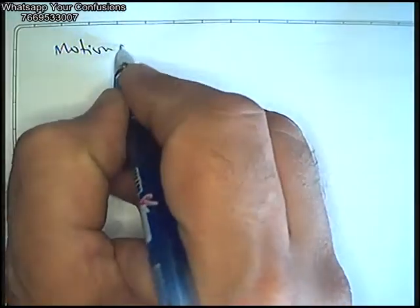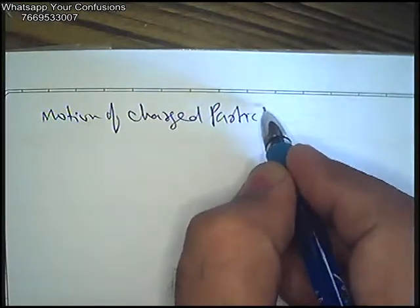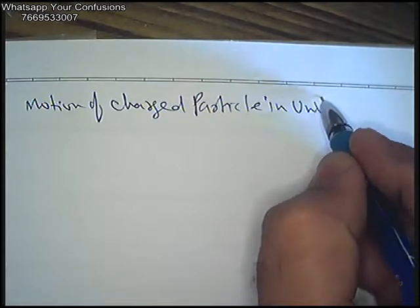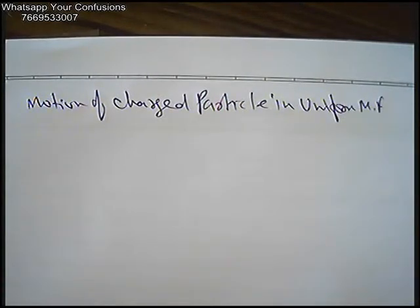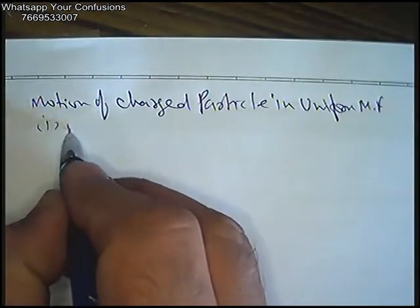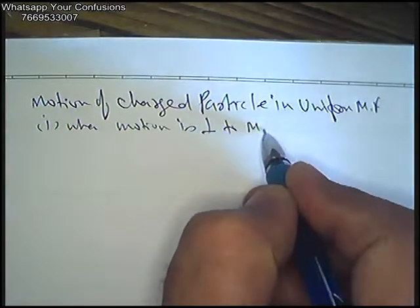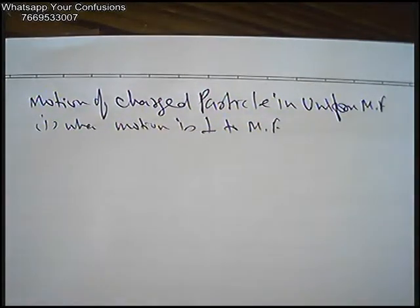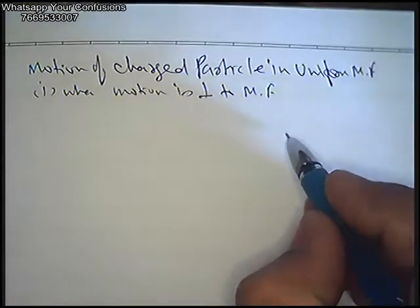We will discuss the motion of a charged particle in a uniform magnetic field. We will discuss two types of motion. First, we will discuss the case when motion is perpendicular to the magnetic field.